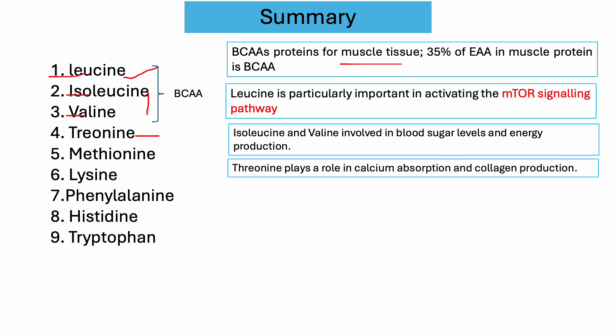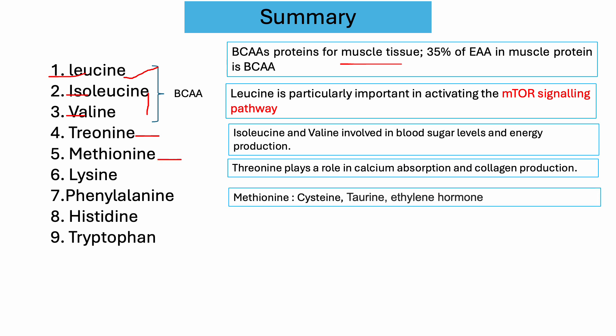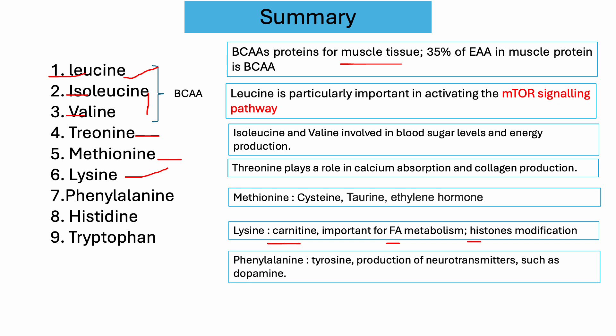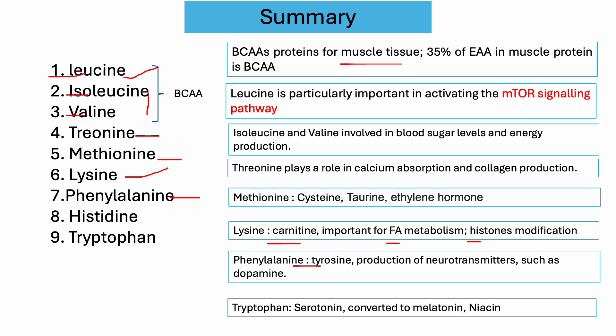Methionine can produce cysteine, taurine, and the hormone ethylene. Lysine helps produce carnitine, which is important for fatty acid metabolism, and also contributes to histone modification. Phenylalanine can produce tyrosine and different neurotransmitters such as dopamine. Histidine contributes to the production of histamine. Tryptophan is very important for producing serotonin, which can also convert to melatonin, and tryptophan can also produce niacin. That's all about today's lecture, thank you very much.